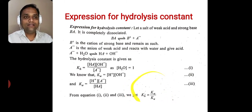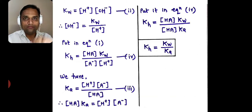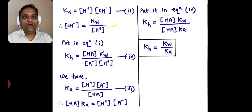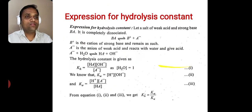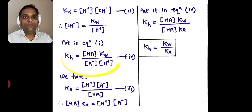To show how this is derived: from Kw = [H⁺][OH⁻], we rearrange to get [OH⁻] = Kw / [H⁺]. Substituting into equation 1 gives KH = [HA] · Kw / ([A⁻][H⁺]). We call this equation 4.